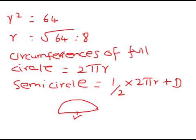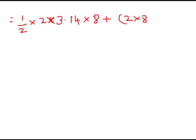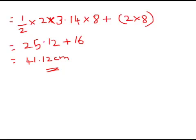So now we apply the value. Half into 2πr, so 2π value would be 3.14 and r would be 8 plus d. d is the diameter which is 2r, so 2 into 8. When you simplify we get 25.12 plus 16 which is 41.12 centimeters is the answer.